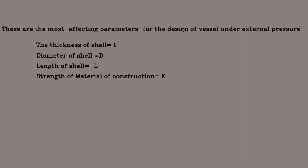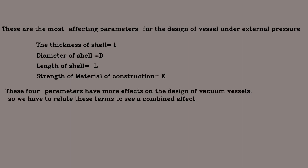For the design of external pressure vessels, the most affecting parameters are: the thickness of shell T, the diameter of shell D, the length of shell L, and the elastic modulus of the material of construction E. These four parameters have the most effect on the design of vacuum vessels, and we need to relate these terms to see their combined effect.